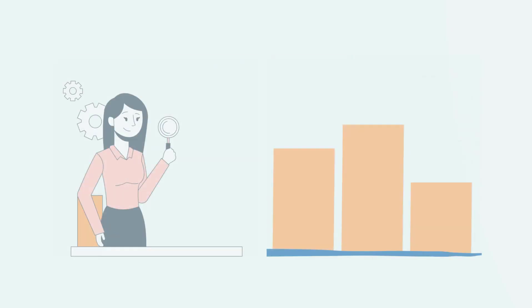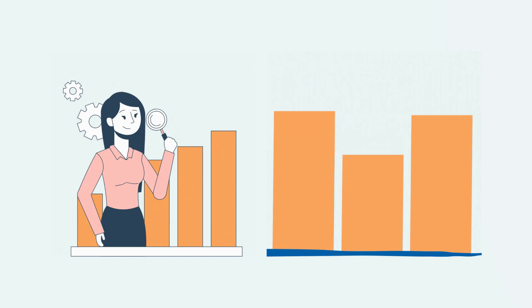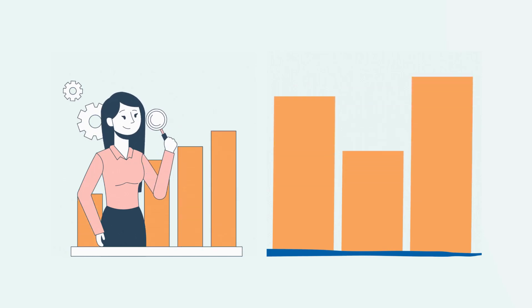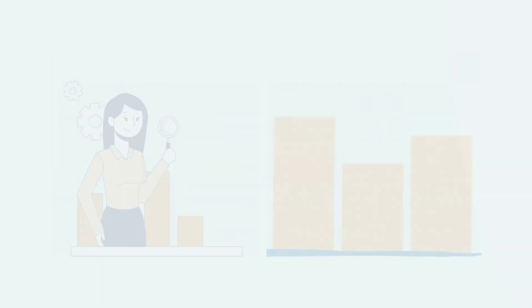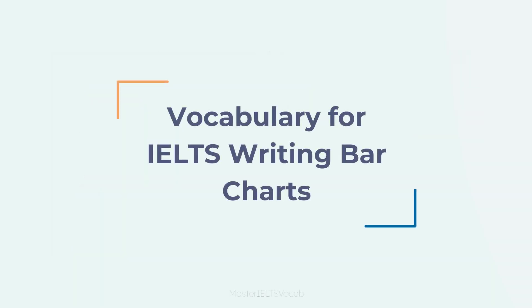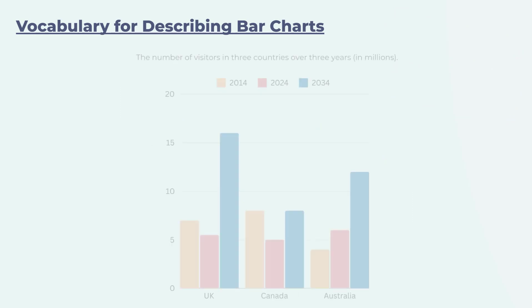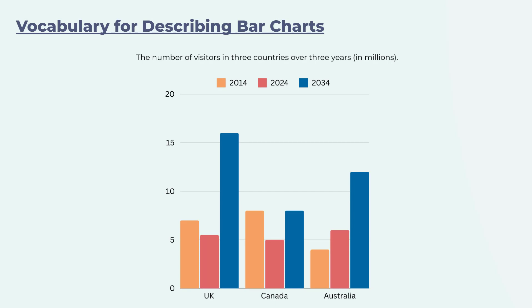Bar charts are certainly a very important part of IELTS Writing Task 1 academic. With that in mind, this lesson will be exploring vocabulary for IELTS writing bar charts. Specifically, we'll be looking at language to compare and describe. Here we have an example of a bar chart similar to what you might see on the day of your Task 1 test.